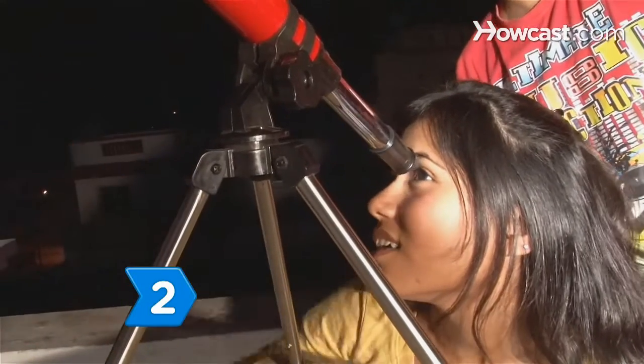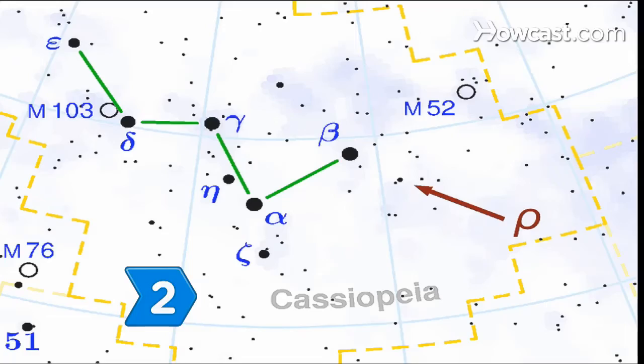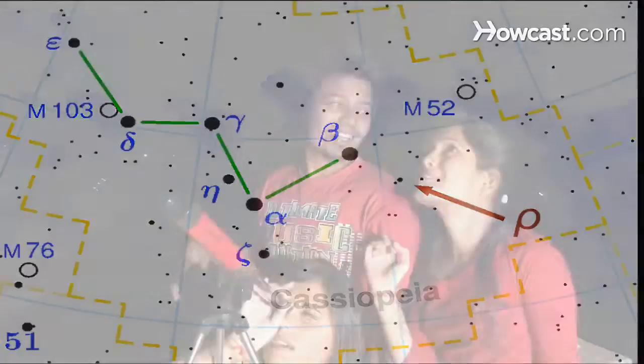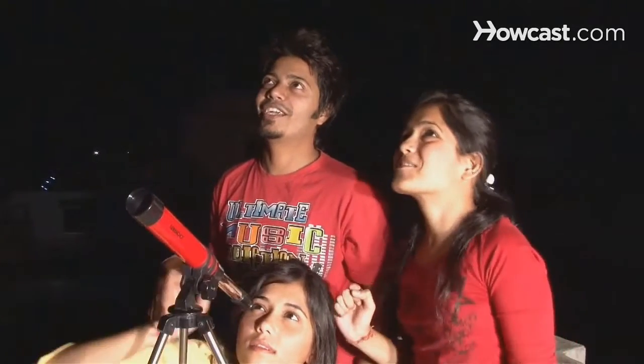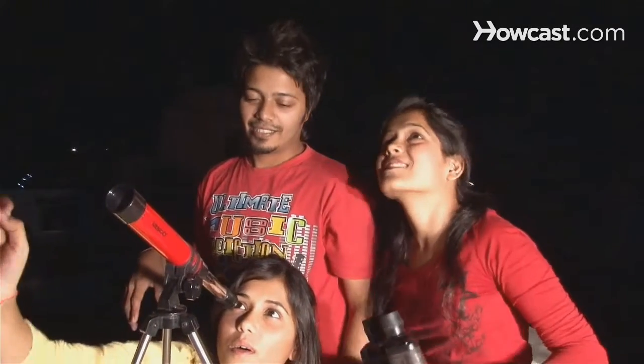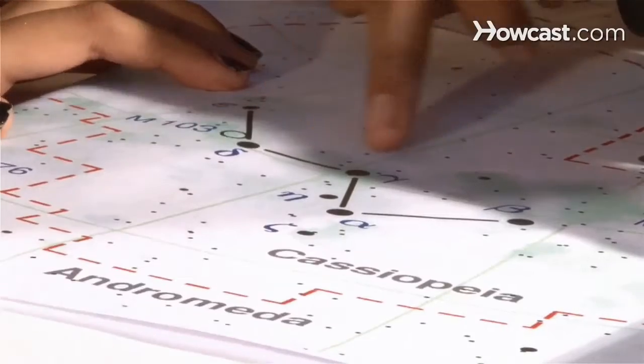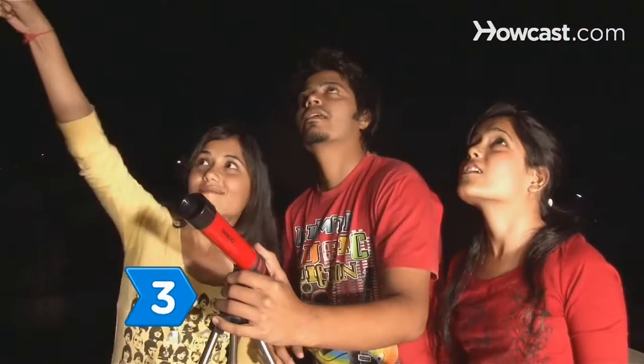Step 2. Find the constellation Cassiopeia at the top of the sky in mid-autumn. The mythological queen is represented by five bright stars making a W or M shape.